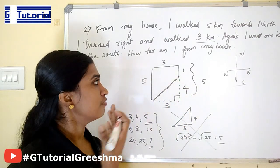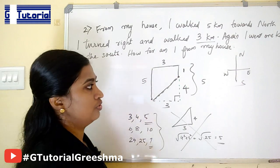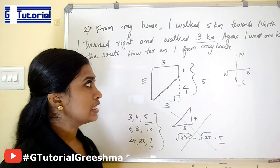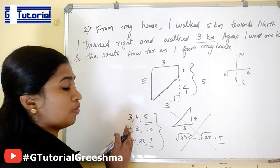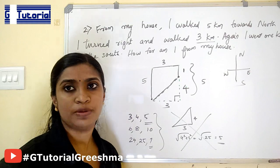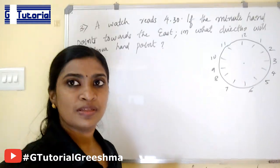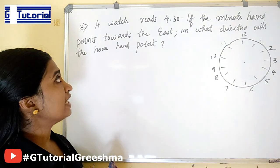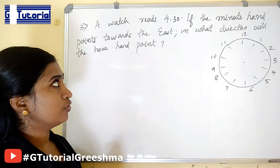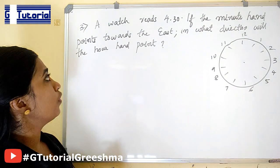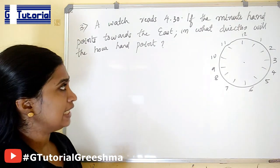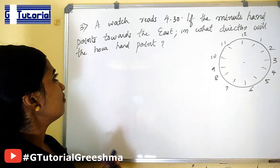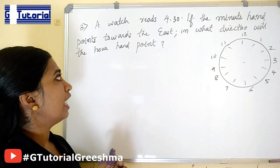This is the type 2 problem. Now we can go for the type 3 problem. This is the third type: A watch reads 4:30. If the minute hand points towards the east, in which direction will the hour hand point?